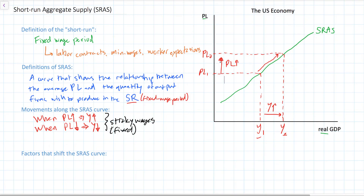It's just like in microeconomics: when price rises, firms have an incentive to produce more goods because they can earn more profits. When prices fall, firms have an incentive to produce fewer goods and reduce the number of workers they employ because they can earn less profit at lower price levels. This explains the direct relationship we observe in our short-run aggregate supply curve.